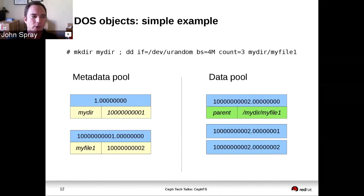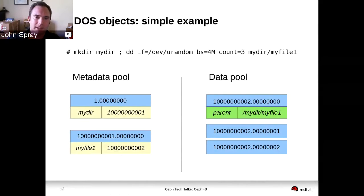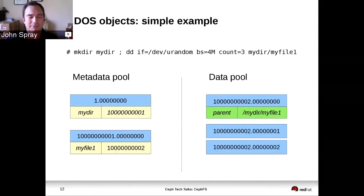This is a simple example of what objects you end up with after creating a directory and a file within your CephFS file system. We create a directory called 'mydir' and write 12 megabytes of data to 'myfile1' within it. On the left-hand side you see two objects in the metadata pool — these are directory fragment objects. The top one is for the root directory, which has inode number one. Directory fragment 1.000 contains a single entry for 'mydir'.